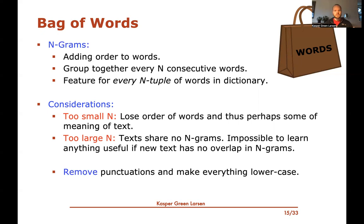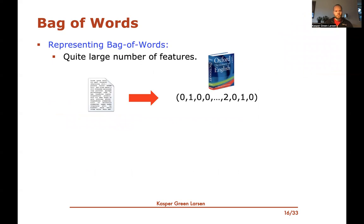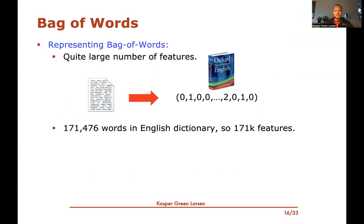A typical thing to try is to have as much data that looks similar as possible — for example, remove punctuation from the text. Also, often you make everything lowercase, just so you don't have two different words depending on whether a word is capitalized or not. When you do this, the dictionary is quite long, which means you can have a lot of features. These feature vectors become really, really long. For instance, there are around 171,000 words in the English dictionary, which means we'll have 171,000 features in our feature vector. These are pretty big feature vectors that we're going to feed into our learning algorithms.